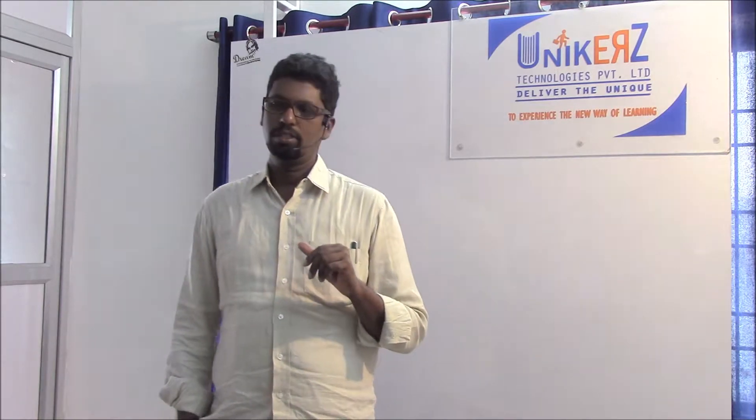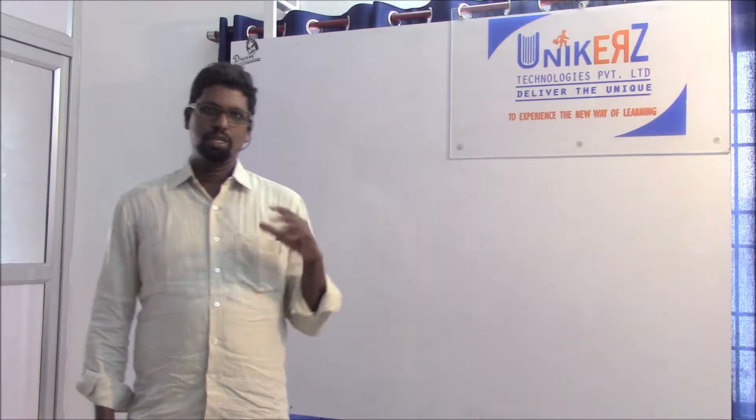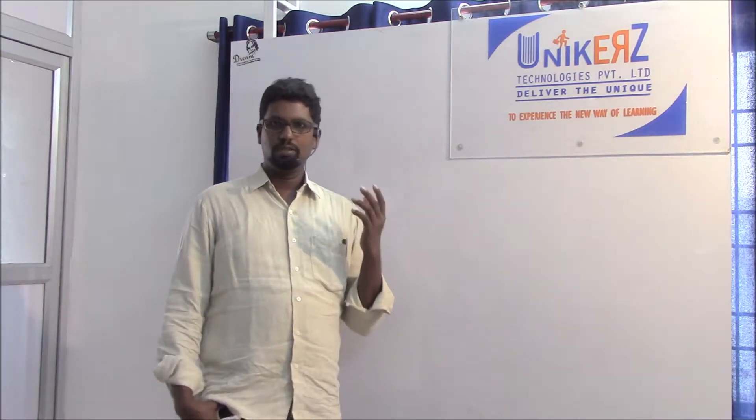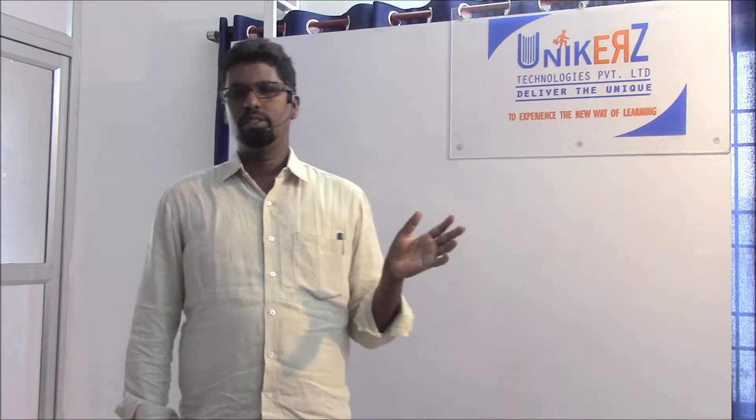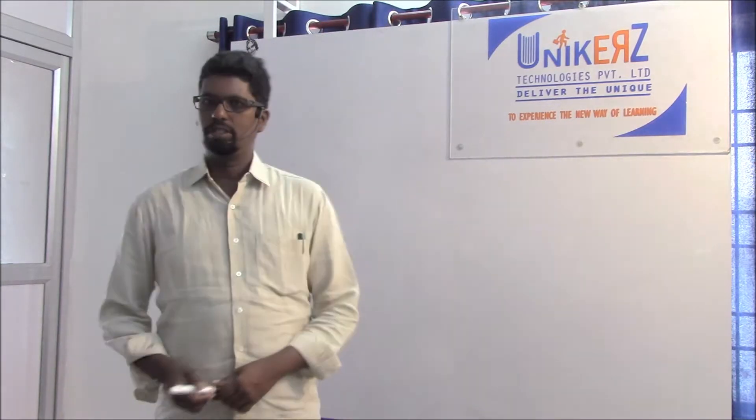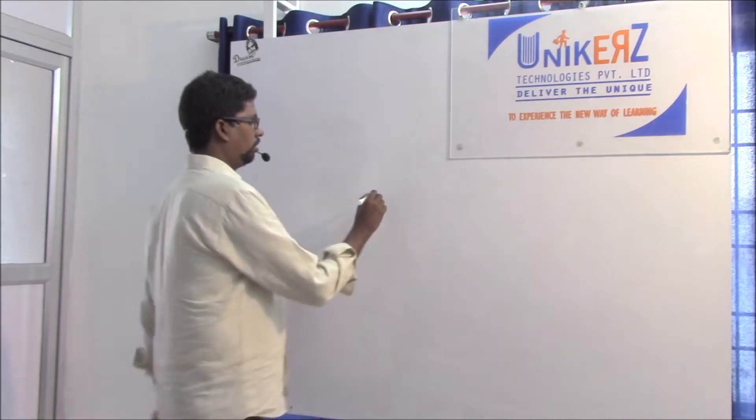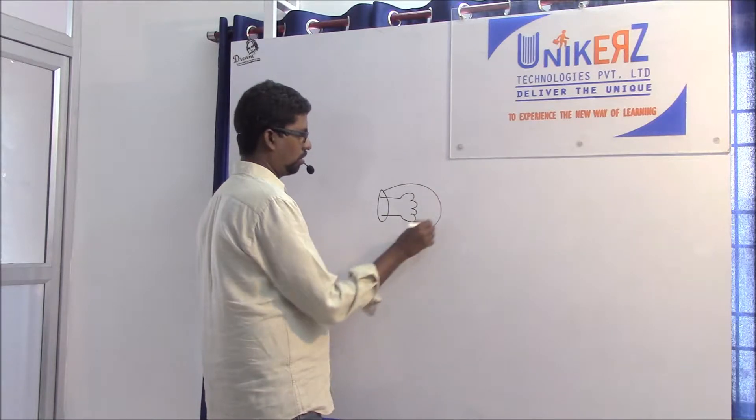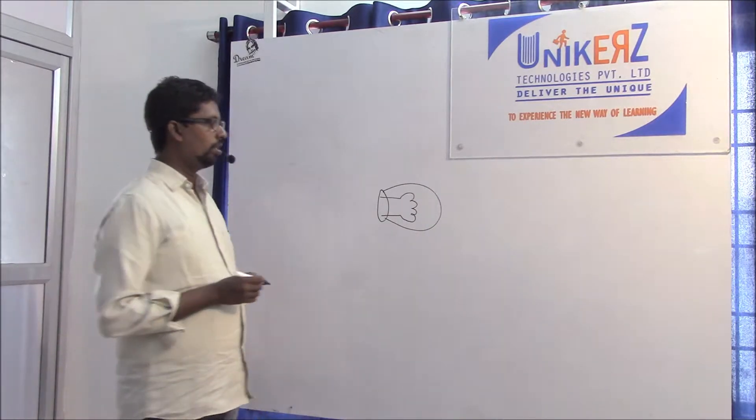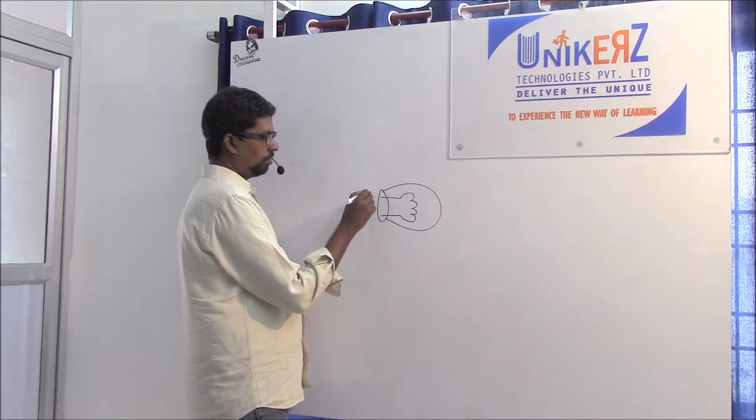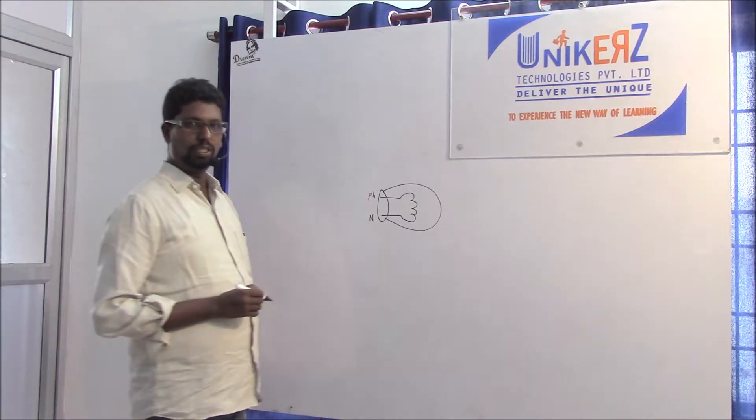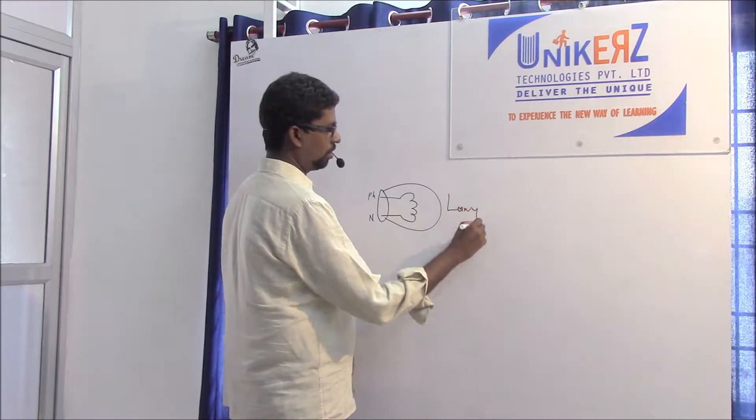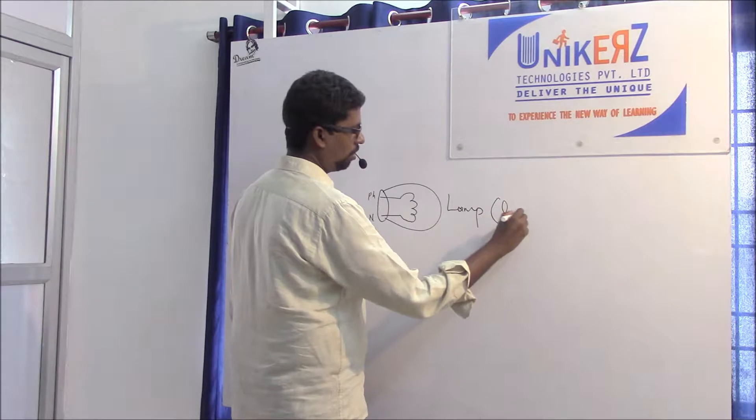Suppose consider a light - light is simple example for electrical load. Suppose this is the lamp. This is the phase neutral terminal, this is lamp called load.